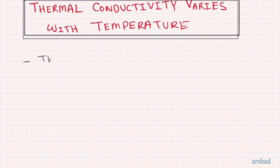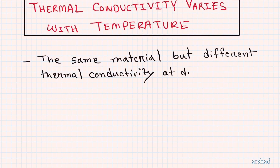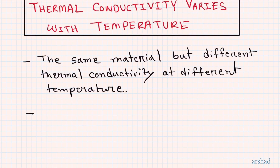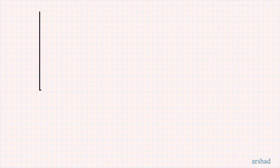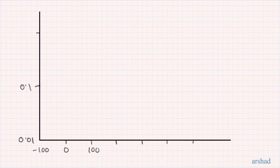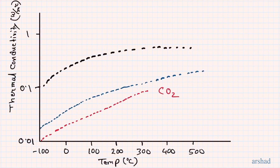Thermal conductivity also varies with temperature, meaning the same material has a different thermal conductivity at different temperatures. For example, the thermal conductivity of air at 20°C is different from that at 400°C. Plotting temperature on the x-axis and thermal conductivity on the y-axis: for gases like carbon dioxide, air, and hydrogen, thermal conductivity generally increases with increasing temperature.